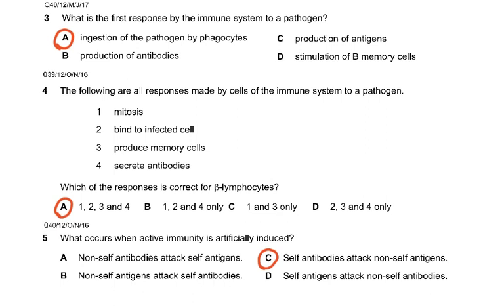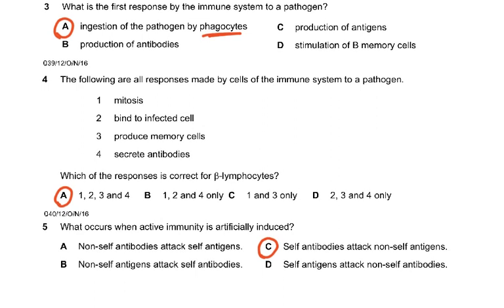What is the first response by the immune system to a pathogen? Ingestion of the pathogen by phagocytes — that's a non-specific response, because the phagocyte doesn't know what it is but knows it's a pathogen, so it's just going to engulf and destroy it. The responses made by cells of the immune system include: mitosis, bind to infected cell, produce memory cell, secrete antibodies — all four of them, so the answer is A: one, two, three, and four.